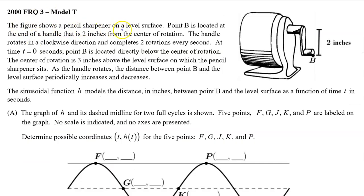The figure shows a pencil sharpener on a level surface. Point B is located at the end of a handle that is two inches from the center of rotation. The handle rotates in a clockwise direction and completes two rotations every second. At time t equals zero seconds, point B is located directly below the center of rotation. The center of rotation is three inches above the level surface on which the pencil sharpener sits. As the handle rotates, the distance between point B and the level surface periodically increases and decreases. The sinusoidal function H models the distance in inches between point B and the level surface as a function of time in seconds.